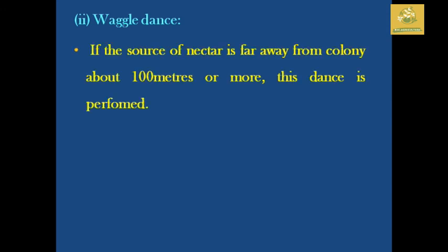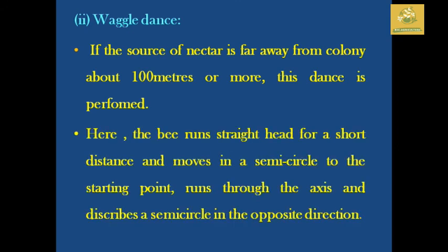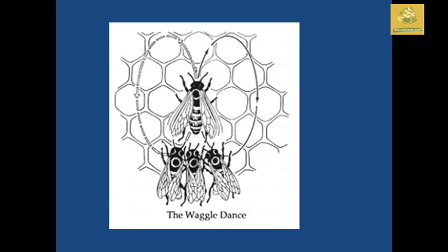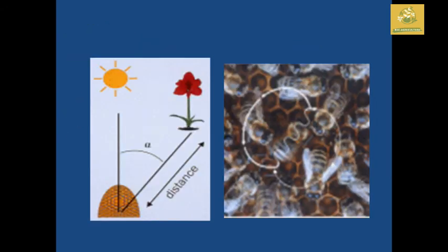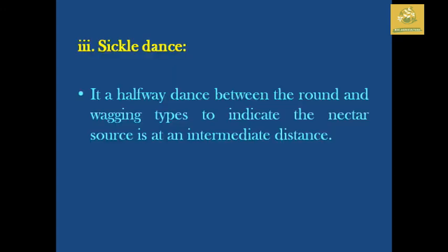This is the waggle dance — the second sort of dance. If you look at 100 meters, you can see the nectar source. If you look at this dance, it is a semi-circle shape. In a short-hand distance, you can go in the opposite direction. This is the waggle dance. This is the bee dance — the sickle dance. It is a half-meet dance in a round shape. The sickle dance is at around 50 meters — that is the young source.